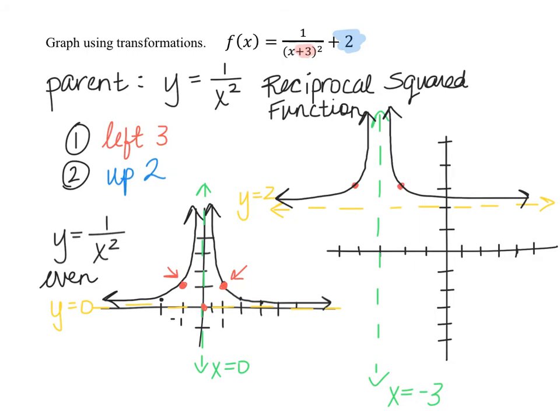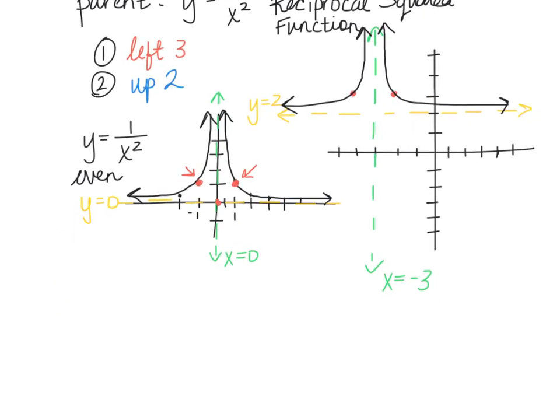Now, of course, we could go ahead and find additional points, like the y-intercept and the x-intercept, and I'll go ahead and show that here, because those are always additional points that are really good to include on the graph. Finding the y-intercept is always done by letting x equal 0. So that means we're finding f(0), which would be 1 divided by (0 plus 3) squared, plus 2.